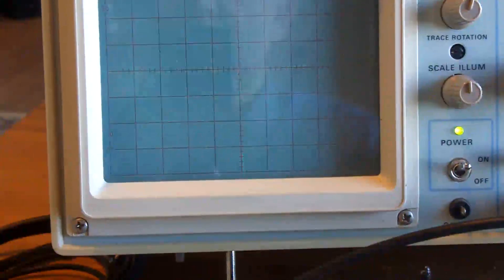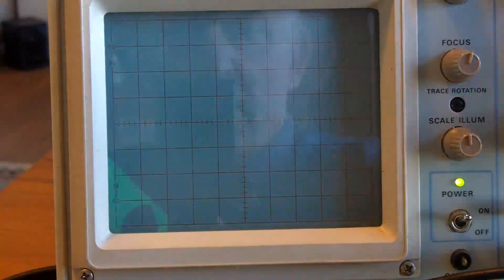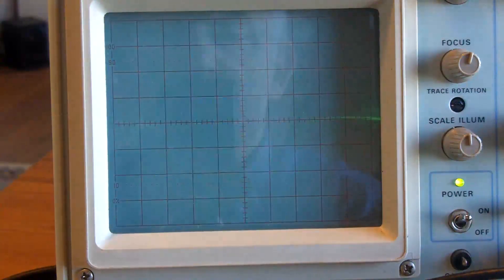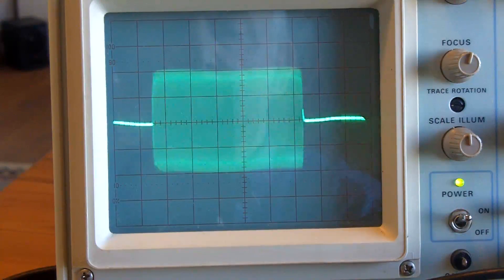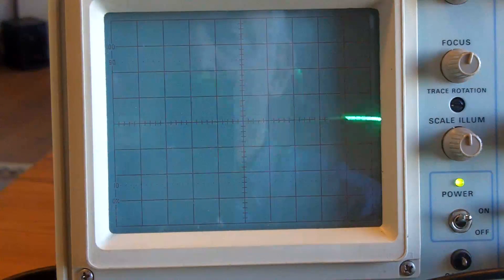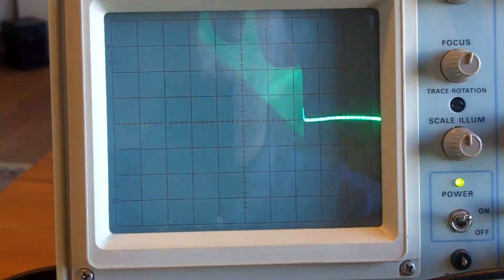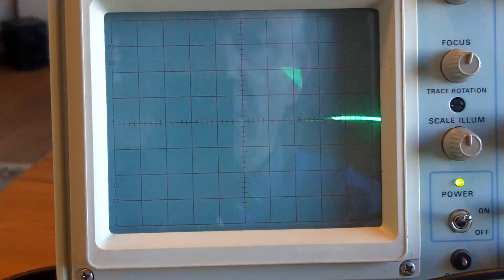And that doesn't seem to be doing much. If I adjust the sweep width, that's what I'm getting there. So it doesn't seem to be doing an awful lot to adjust the width of the sweep. It's doing something, but that's probably not what I expect it to do.